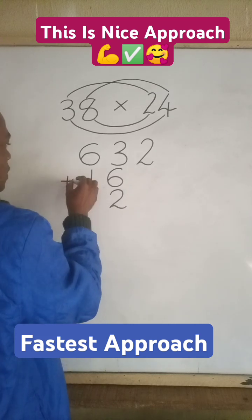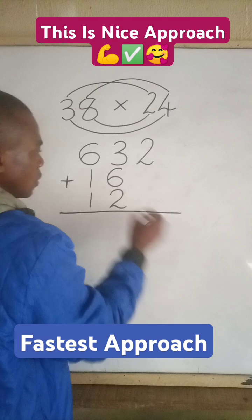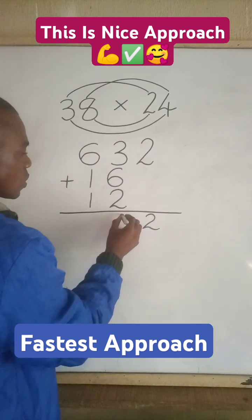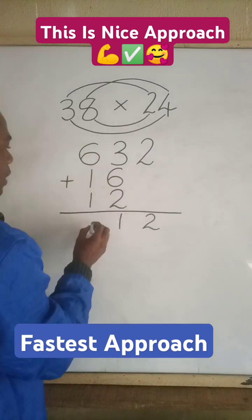So the next thing that I will do now is I will add all of them. I will bring down 2. When you add this, it will give us 11. I will write 1 and carry 1. When I put the 1 here, it will give you 9.